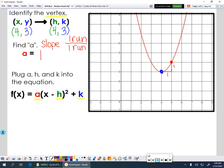And then the last thing we need to do is we just need to plug all this information into our formula. So we're going to replace our a value with 1. And then we're going to replace our h with our h value, which was 4. And then finally, we're going to replace our k with a 3.